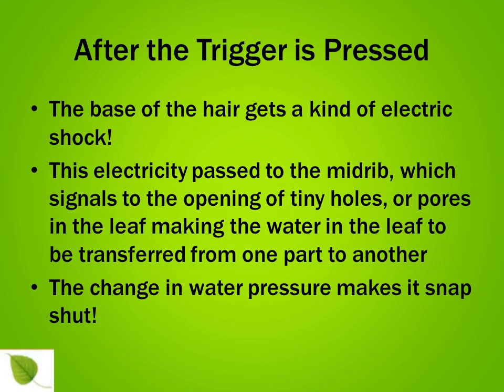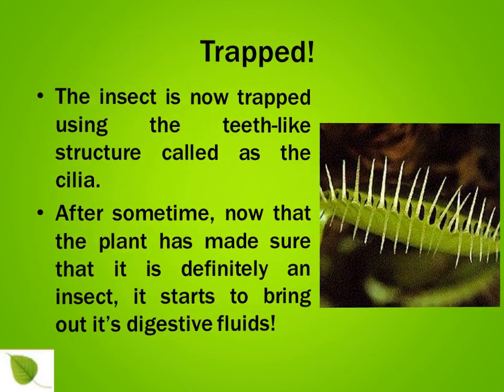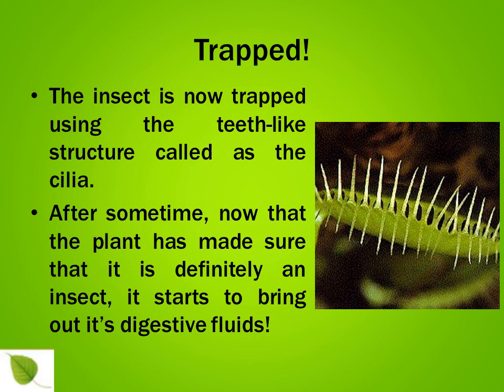What happens after the trigger is pressed? The base of the hair gets a kind of electric shock. This electricity passes to the midrib, which signals the opening of tiny holes or pores in the leaf, making the water in the leaf transfer from one part to another. This change in water pressure makes it snap shut. The insect is now trapped using the teeth-like structure called the cilia.